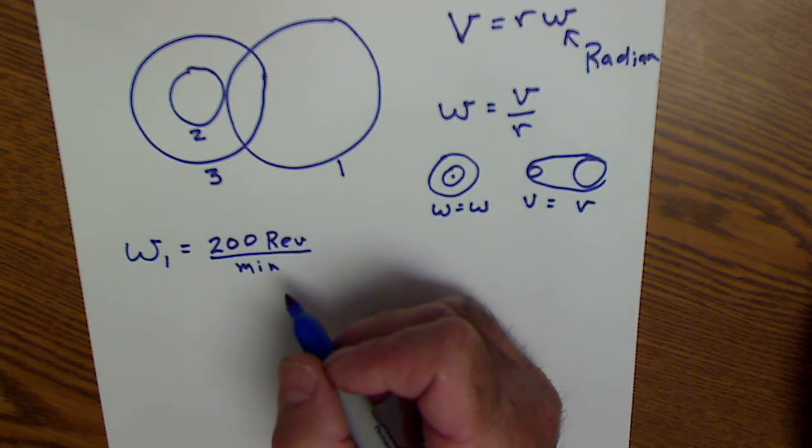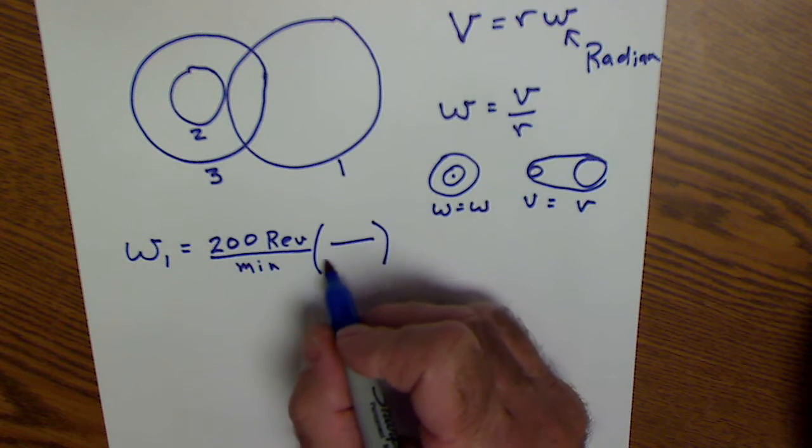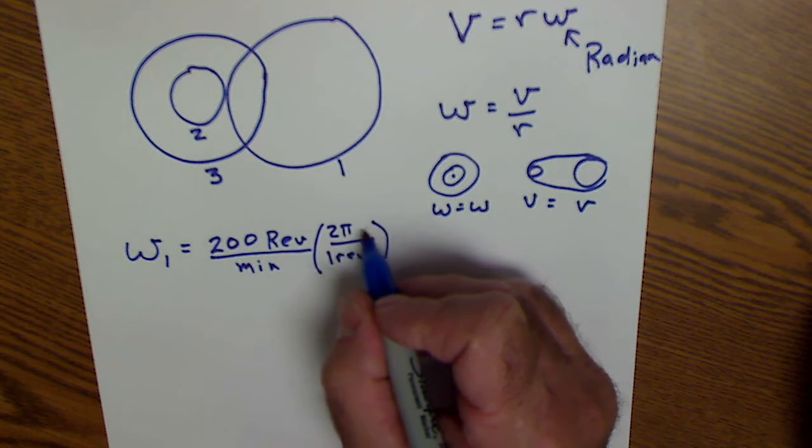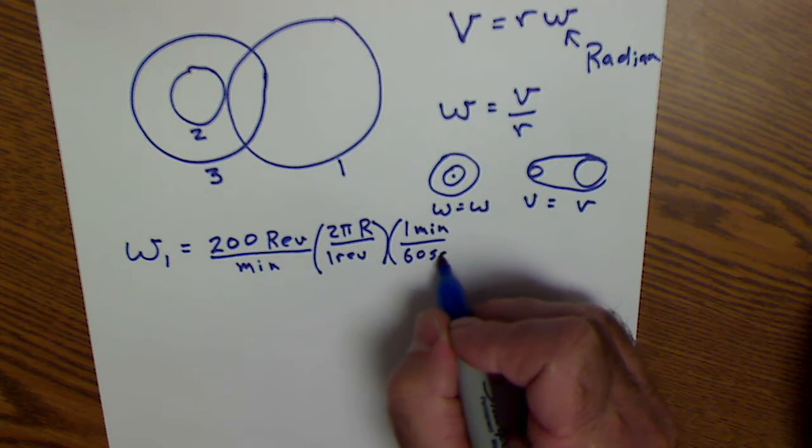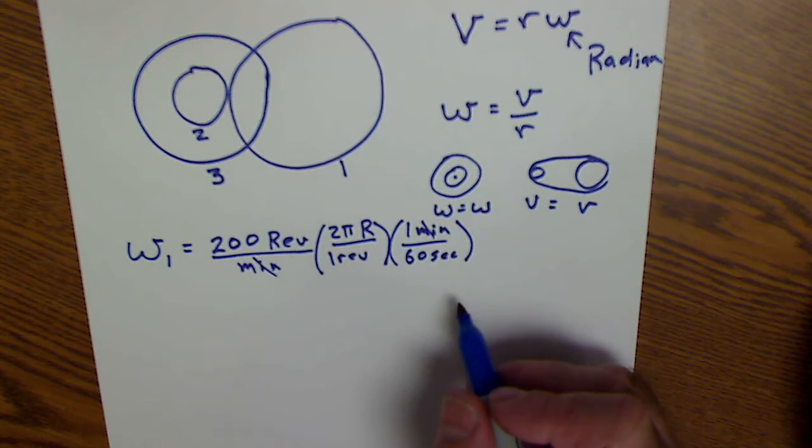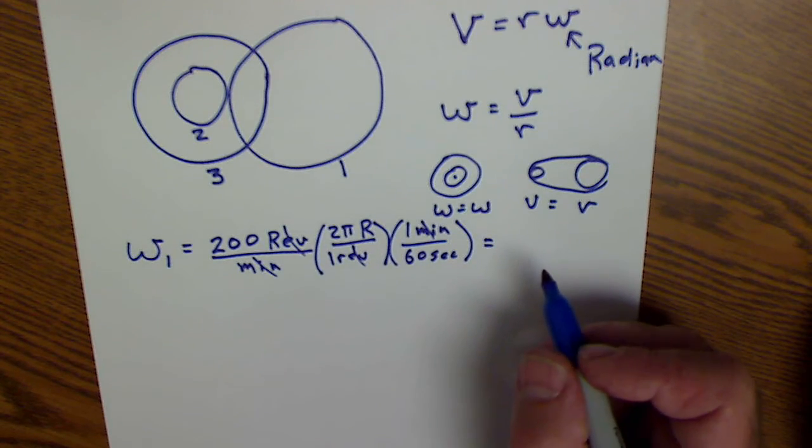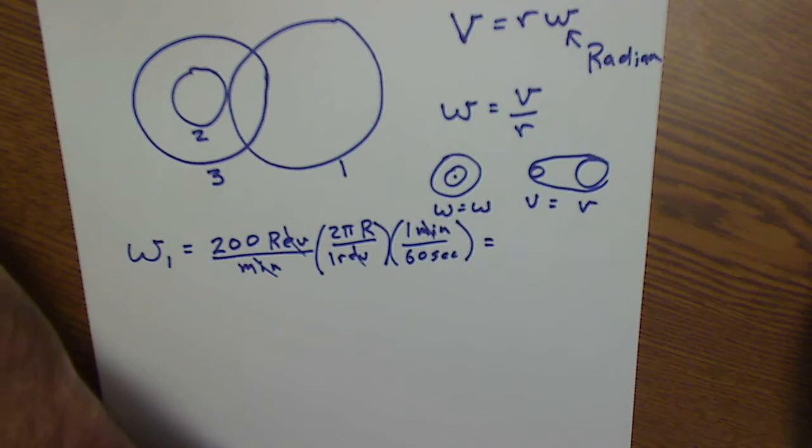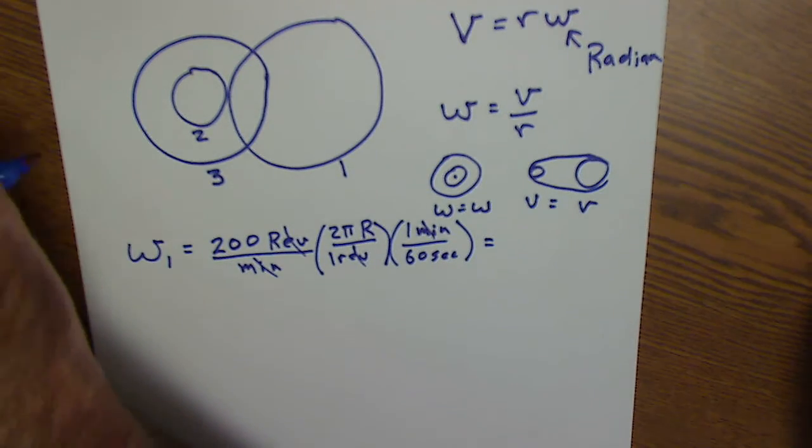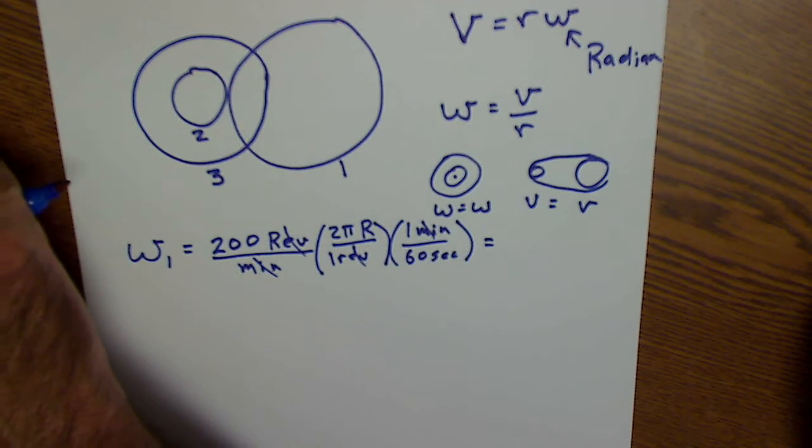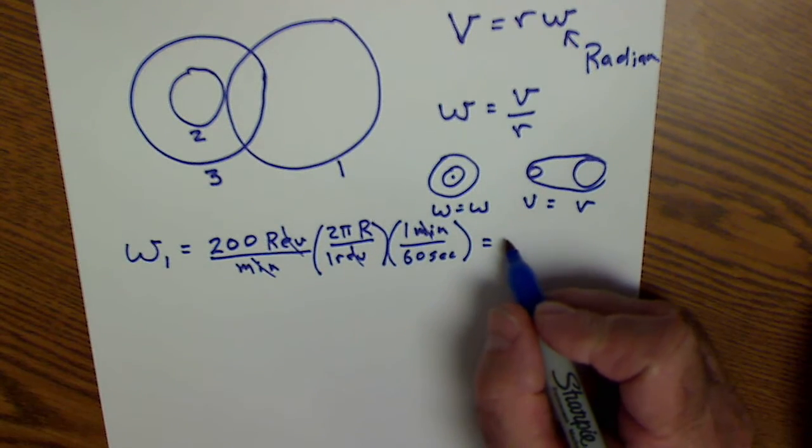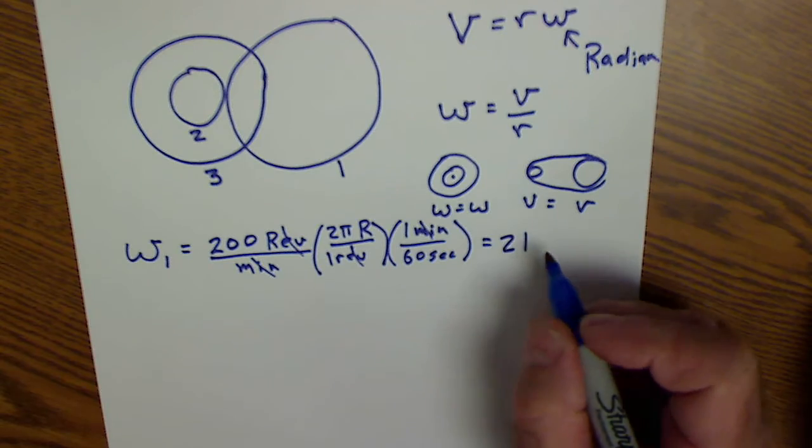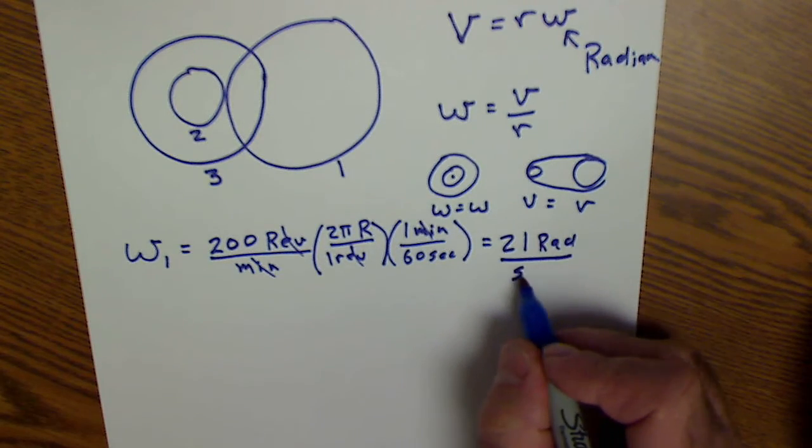The first question is, what is the velocity in radians per second? I'm just going to multiply one revolution, 2π radians. That's going to give me radians per minute, one minute over 60 seconds. Minutes will cancel, revolutions cancel, and that gives me radians per second. So let's see what that is. I have 200 times 2π divided by 60, and that gives me, I'm just going to round here, 20.9, so 21 radians per second.